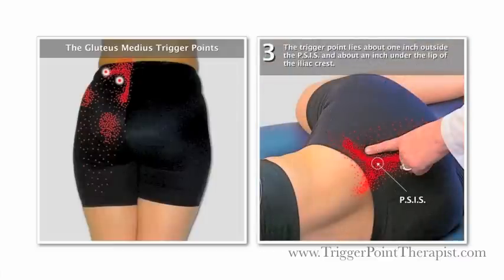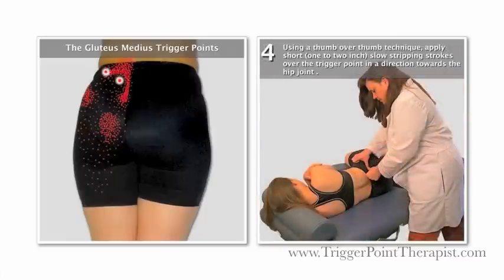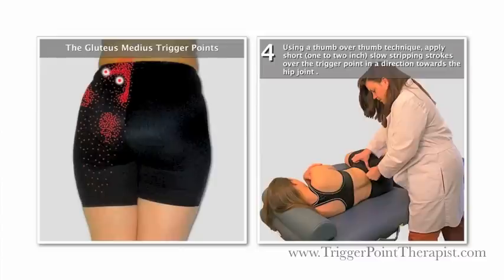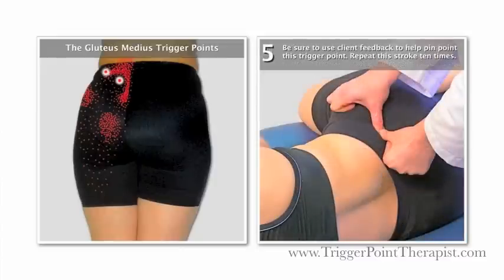The medial gluteus medius trigger point lies about one inch outside the PSIS and one inch under the lip of the iliac crest. This trigger point refers pain across the belt line, to the sacroiliac joint, and into the lower lumbar spine region. To release this trigger point, use a thumb over thumb technique and apply short, slow stripping strokes about one to two inches over the trigger point in a direction towards the client's hip joint. Don't move your contact over the skin — move the skin over the trigger point. Each micro-stripping stroke should take about six seconds to complete. Use client feedback to gauge your pressure and repeat the stroke ten times.